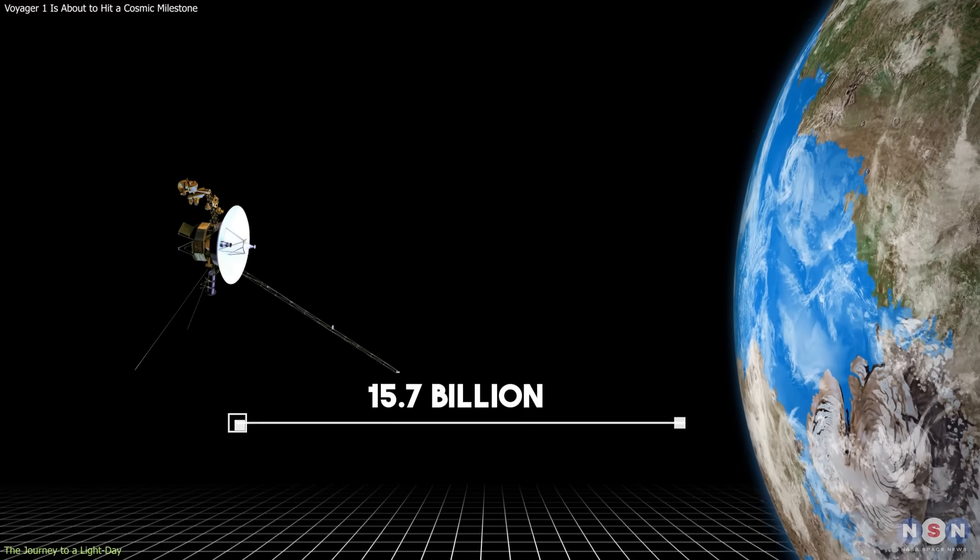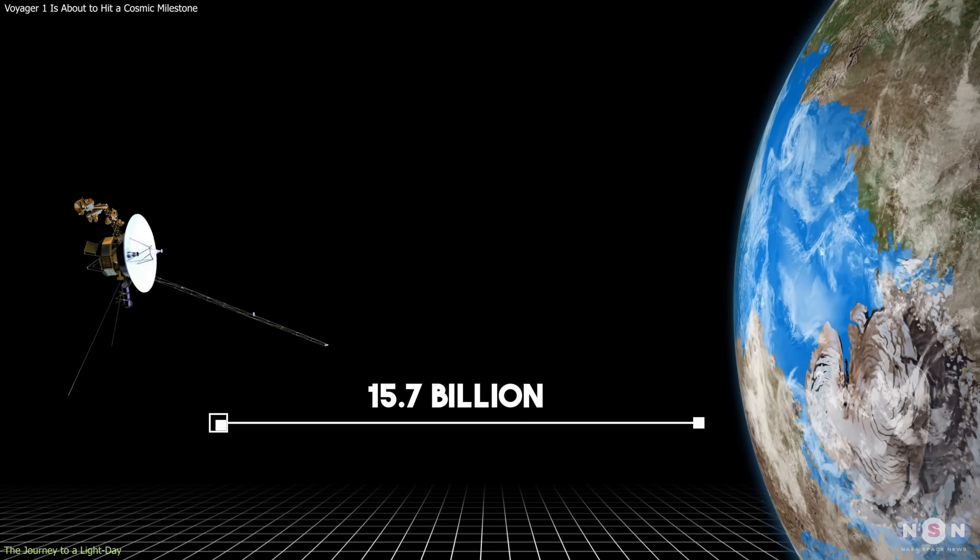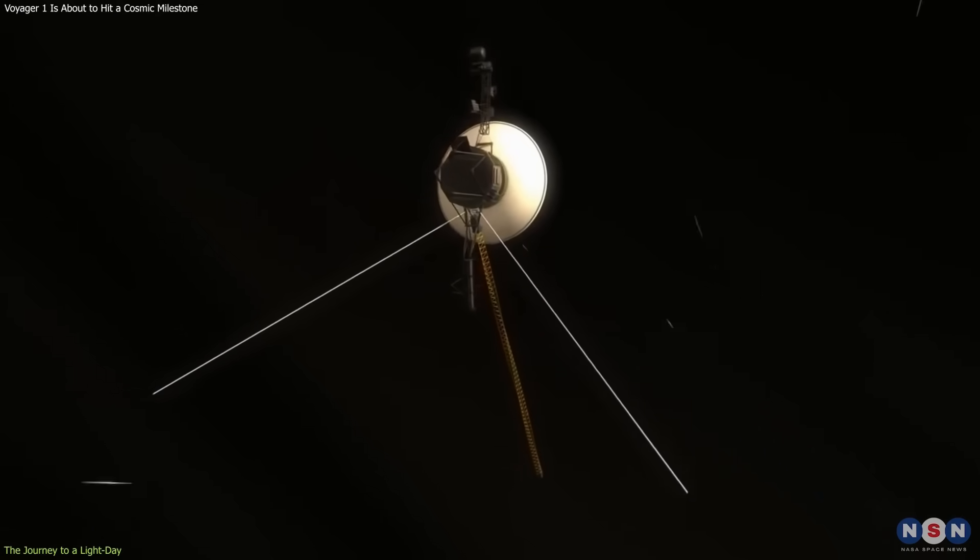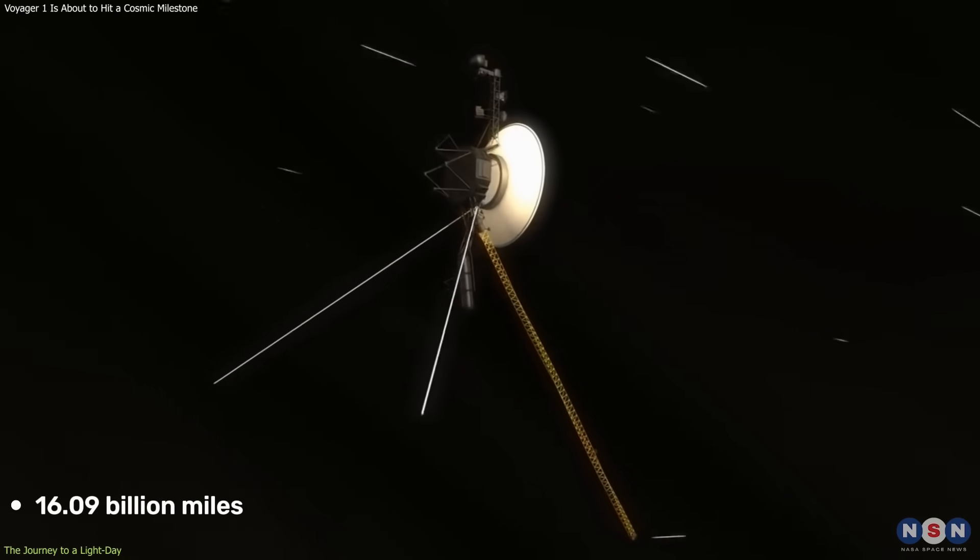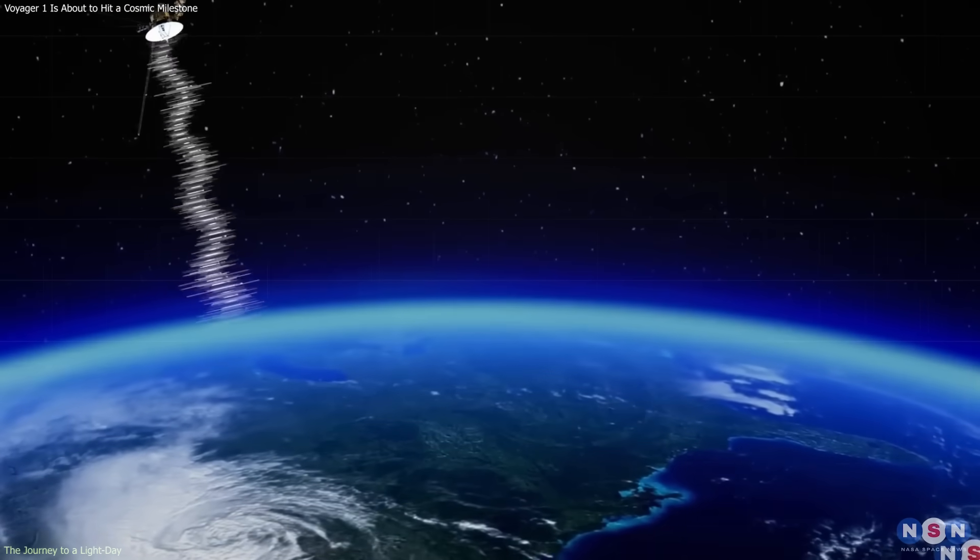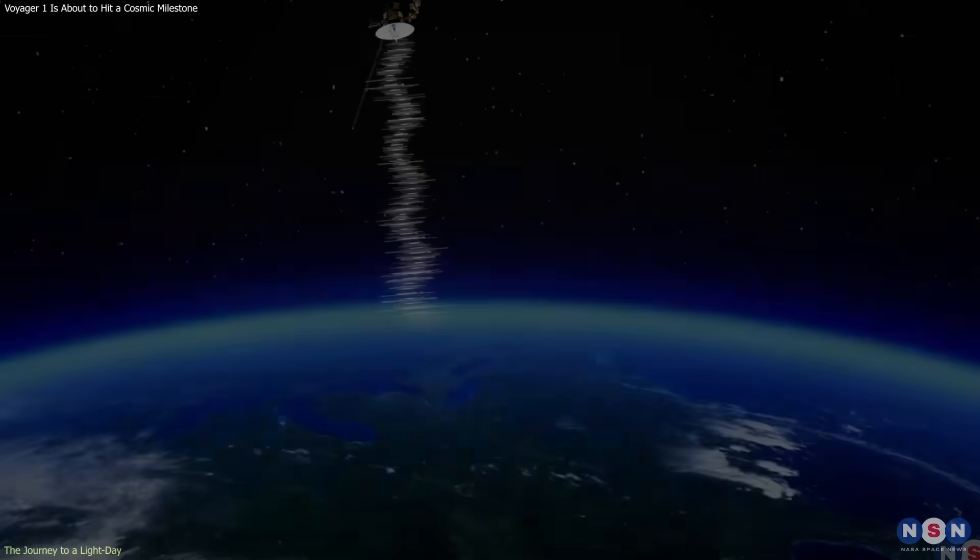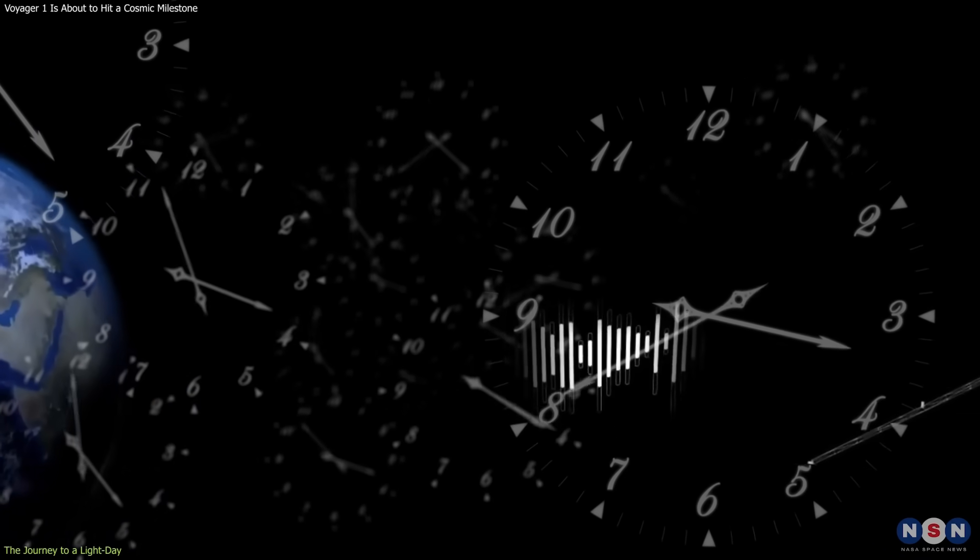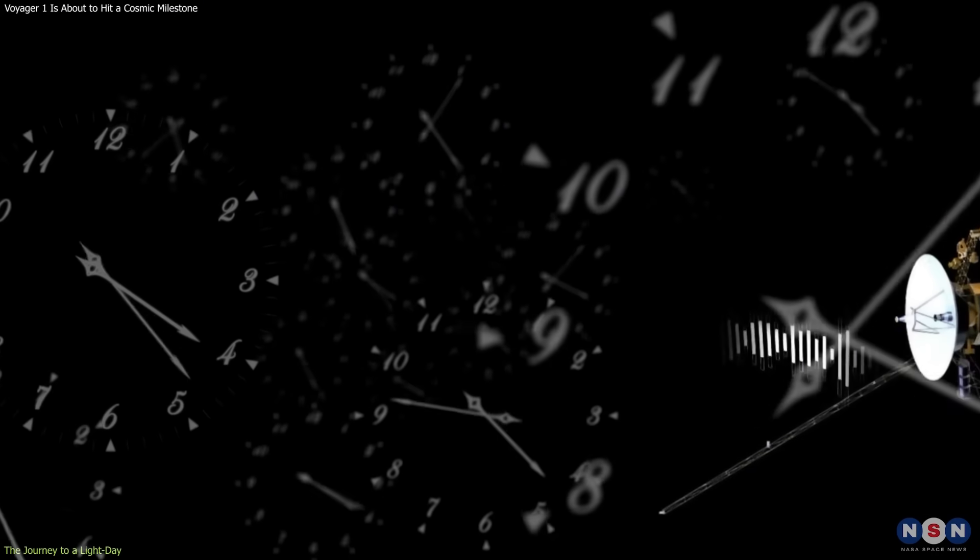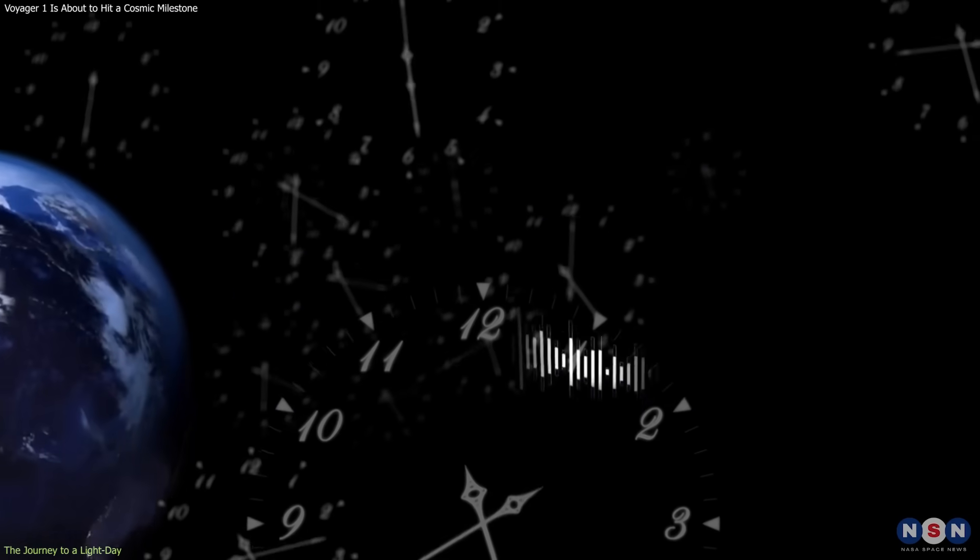Today, Voyager 1 sits roughly 15.7 billion miles from Earth. By late 2026, it will surpass 16.09 billion miles, the equivalent of one light day. This distance isn't just a number, it defines the limit of real-time communication. A single exchange with the spacecraft will require two full days, one for the signal to travel outward and one for the reply to return.